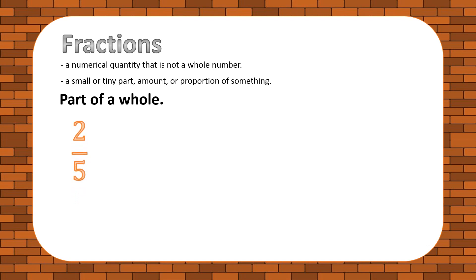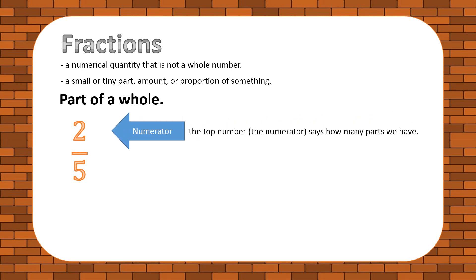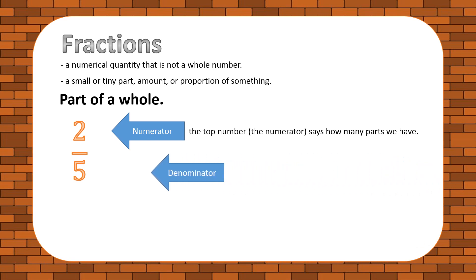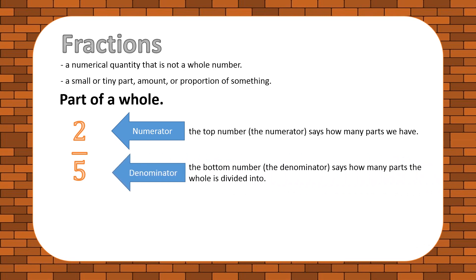Let's show an example of a fraction: two out of five. On the top is the numerator, which represents how many parts or portions we have. At the bottom is the denominator, which shows how many parts the whole is divided into. For this example we have five, so five parts is the entire portion of a whole.